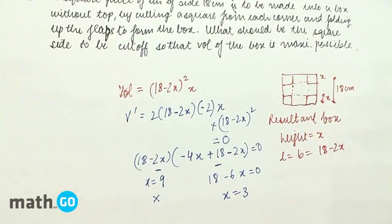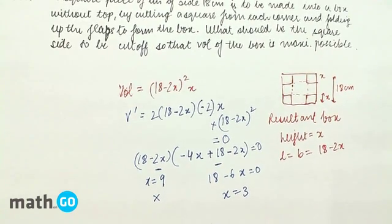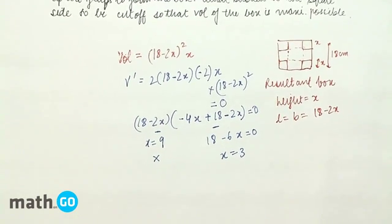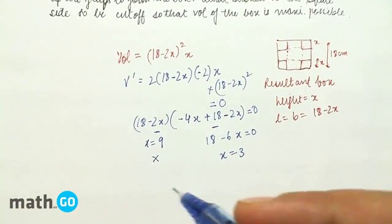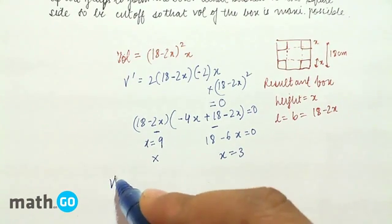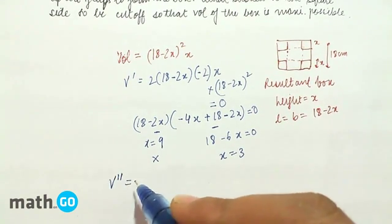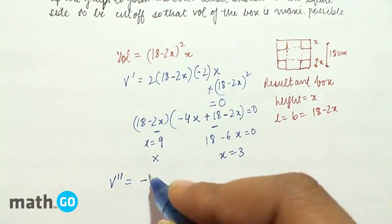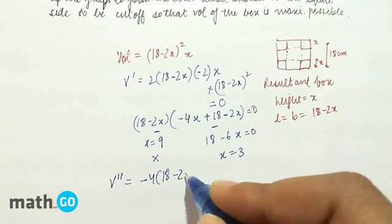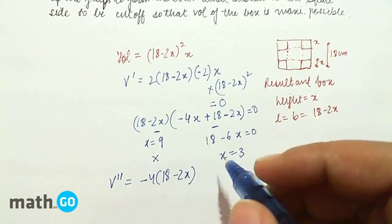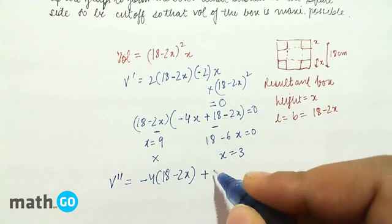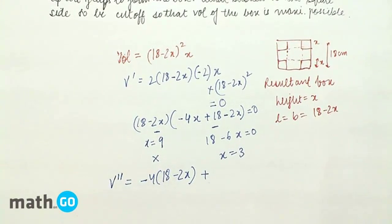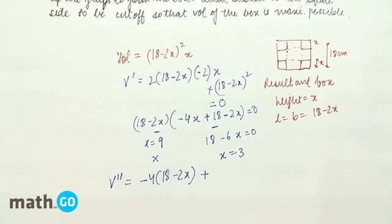Now, the critical point is x equals to 3. But if this is a point of maximum or minimum, this can be tested by the second derivative test. V double dash will be -4(18-2x).